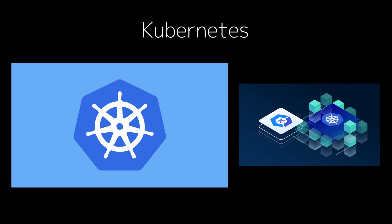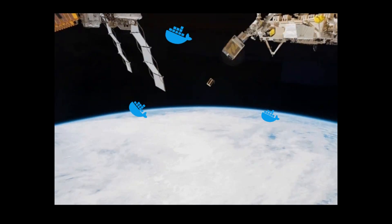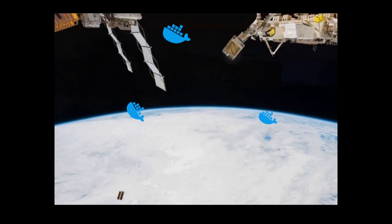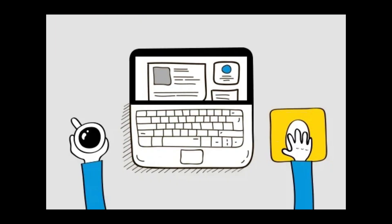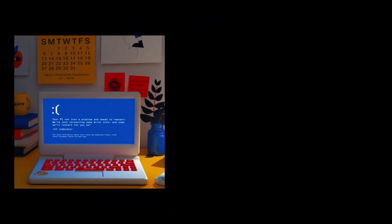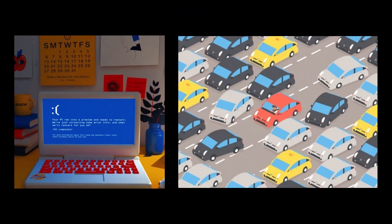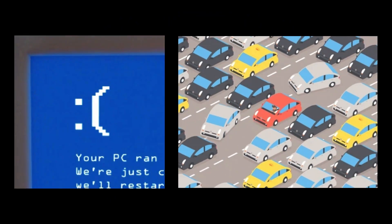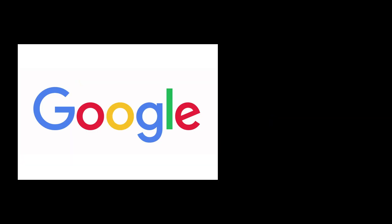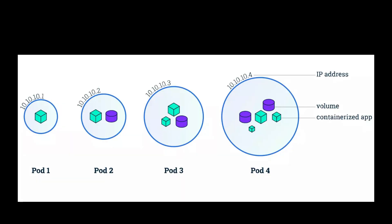Kubernetes is an open source platform that automates the deployment, scaling, and management of containerized applications. But how does it keep apps running smoothly at scale even when servers crash or traffic spikes? And why has it become the foundation of cloud native development for giants like Google and Netflix?